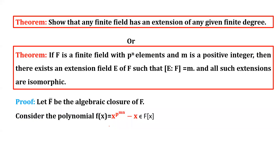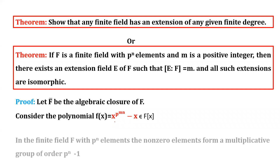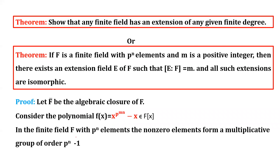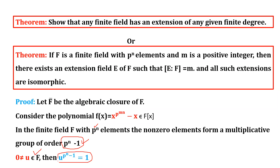In the finite field F with p^n elements, the nonzero elements form a multiplicative group of order p^n minus 1, as discussed in the previous lecture. This means for any nonzero element u in F, u raised to the power p^n minus 1 equals 1.